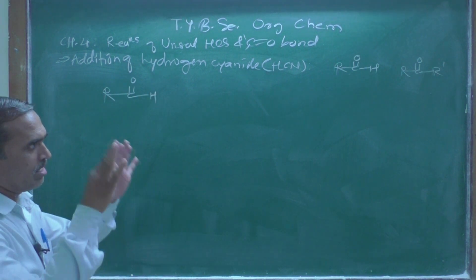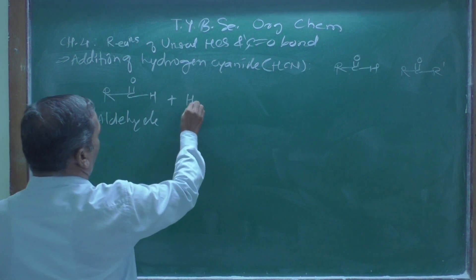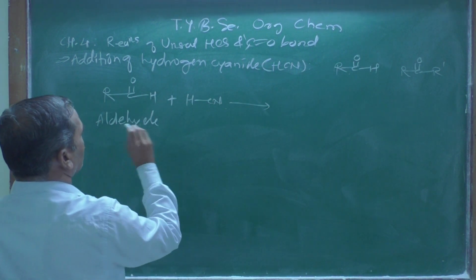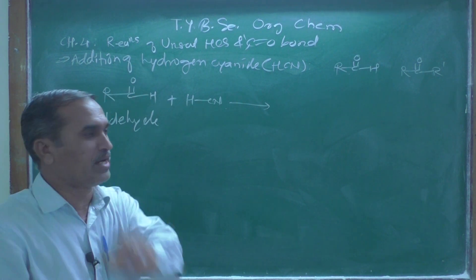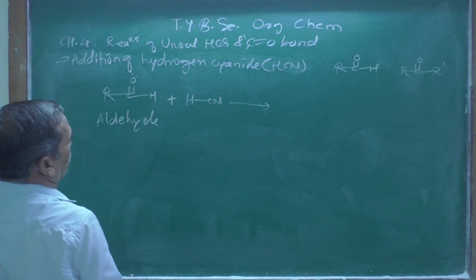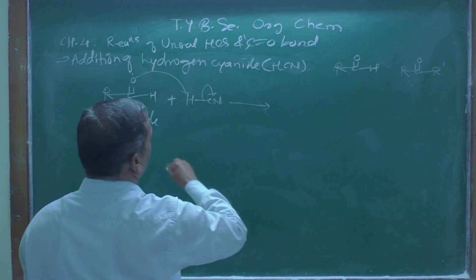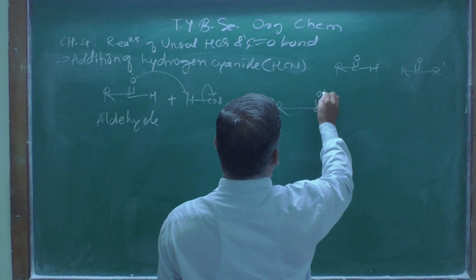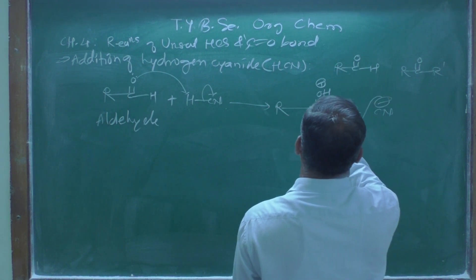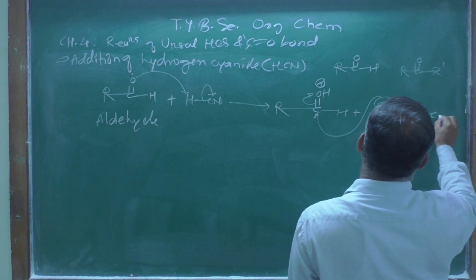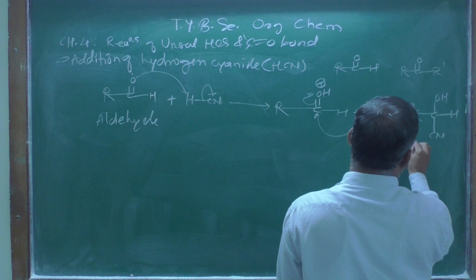Let us see the general reaction. Taking aldehyde with the general formula R-C double bond O, when it is treated with hydrogen cyanide (HCN) under mild acidic conditions: the lone pair on the oxygen atom picks up a proton, giving R-C=OH with a positive charge. Then in the second step, the cyanide group attacks the carbonyl carbon, which gets neutralized.